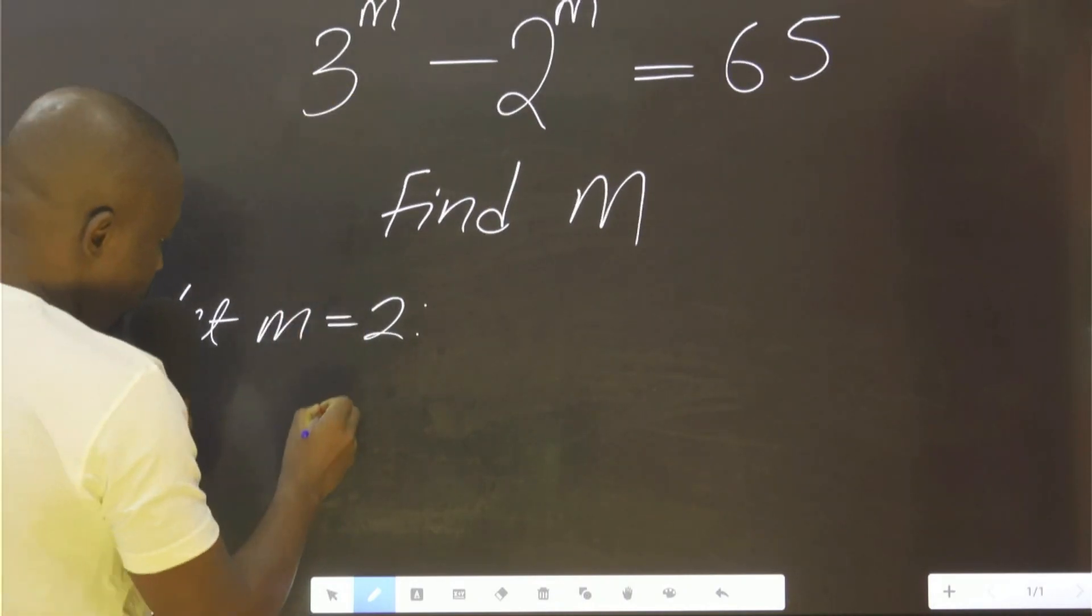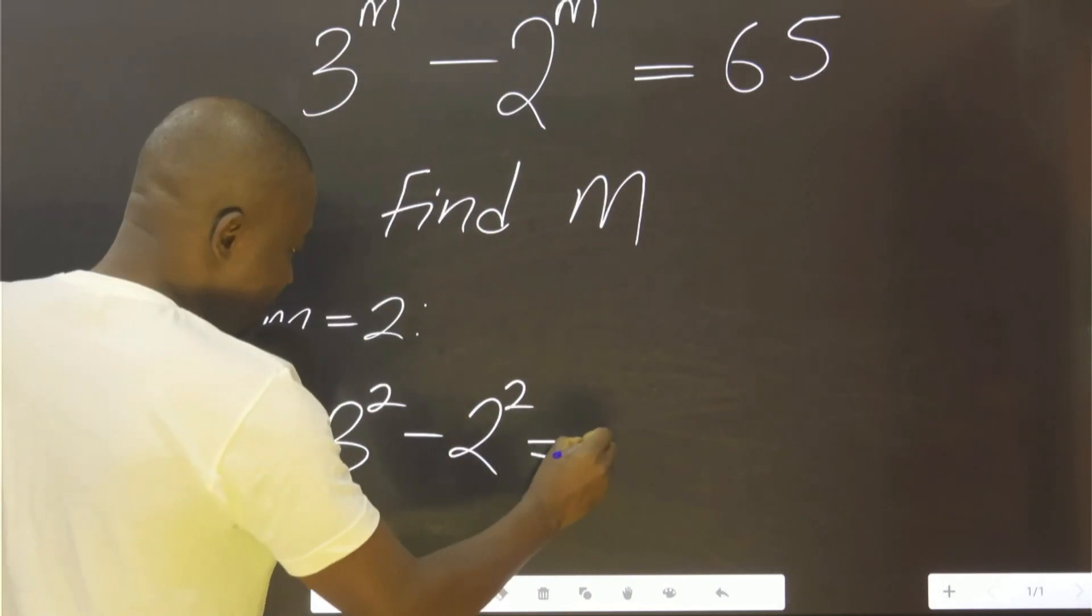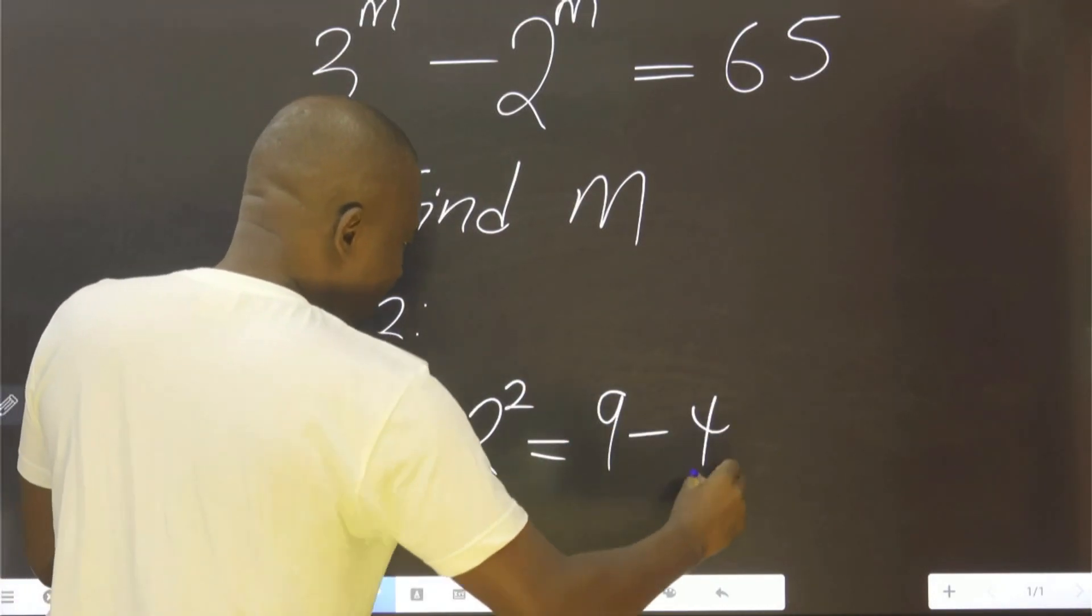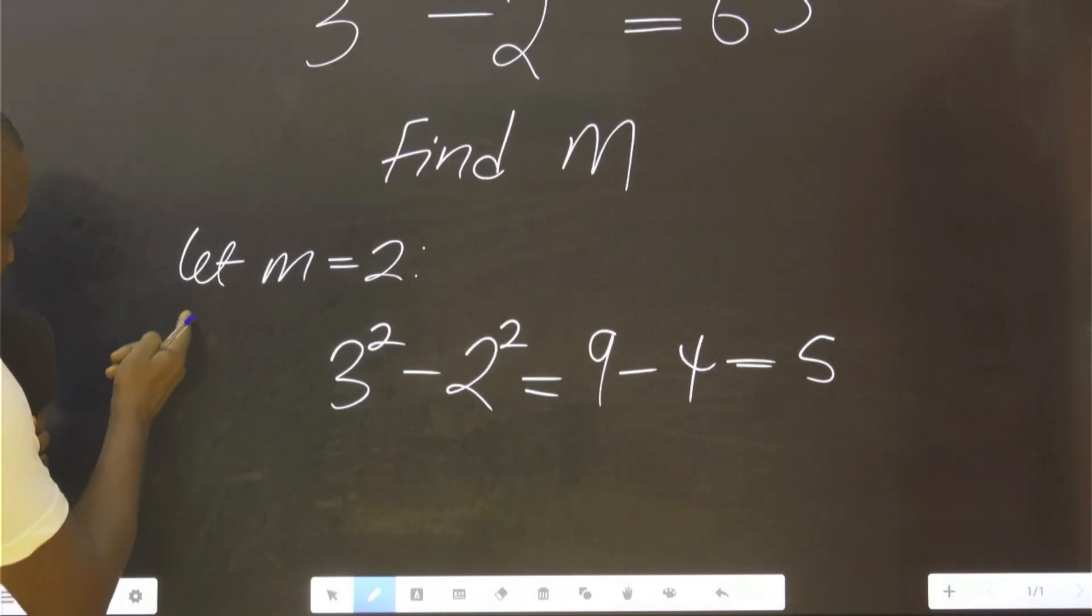If you put 2 here, you agree with me you're going to have 9 minus 4, which equals 5. Now let's try 3. So this is not correct.